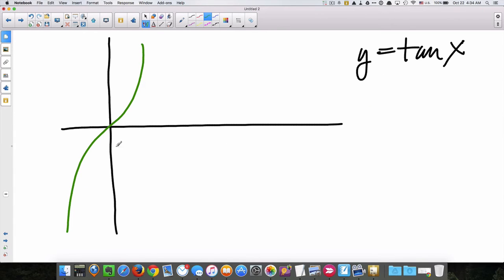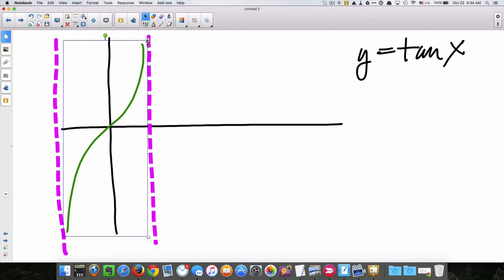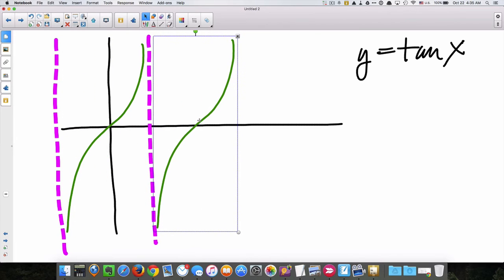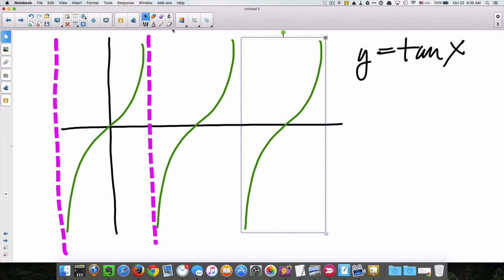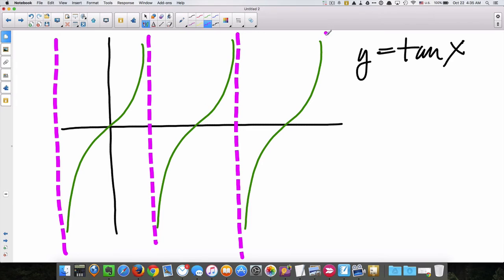y equals tangent x is also a periodic function, meaning that it repeats, and I can tell you easily that this section repeats. This section repeats, and it repeats, and there's still this dark purple line that goes right there, and right there.